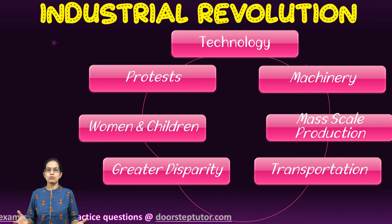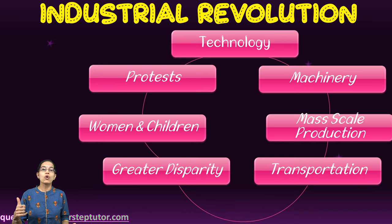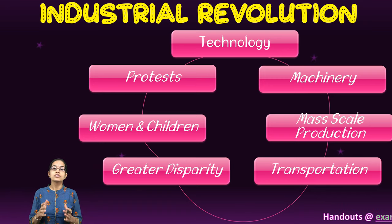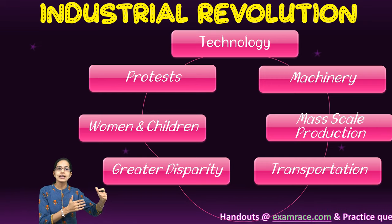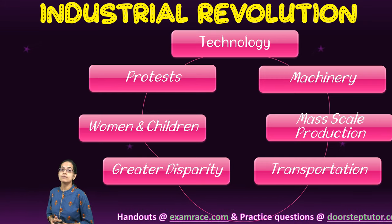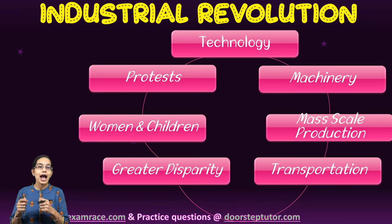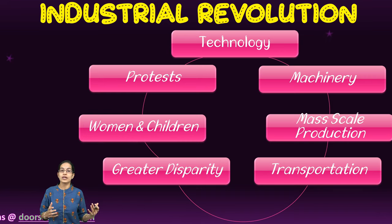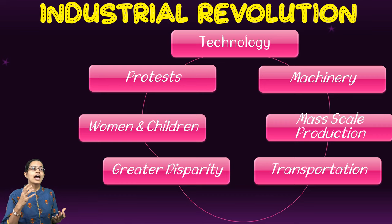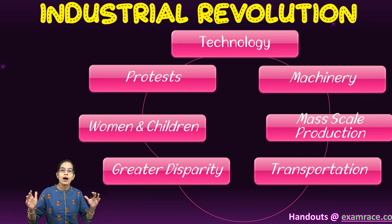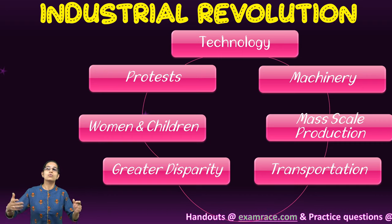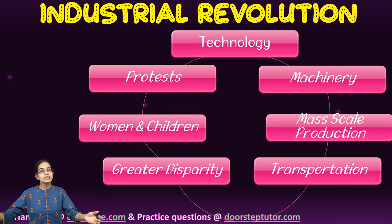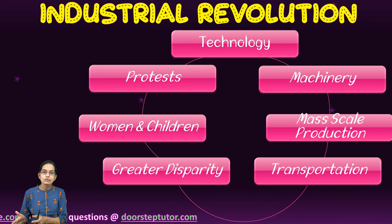What happened during this time was the invention of the steam engine, which was one of the major developments. Steam power led firstly to a role in mining and later in industries. Then you had machinery moving from hand looms to power looms — that was the basic idea where the role of machines improved, and with this there was mass-scale production. Rather than producing one piece of cloth in 10 days, 10 pieces of cloth were produced in one day — that was mass production.